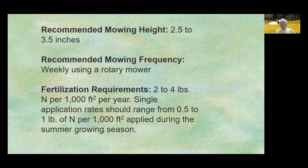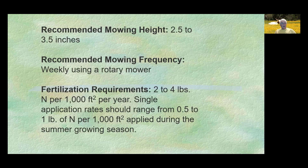Recommended mowing height for St. Augustine is two and a half to three and a half inches high, which makes it a very comfortable mowing height that feels really good when you're walking on it. Recommended mowing frequency is weekly using a rotary mower. Fertilization requirements are two to four pounds of nitrogen per 1,000 square feet per year. Single application rates should range from one-half to one pound of nitrogen per 1,000 square feet applied during the summer growing seasons.